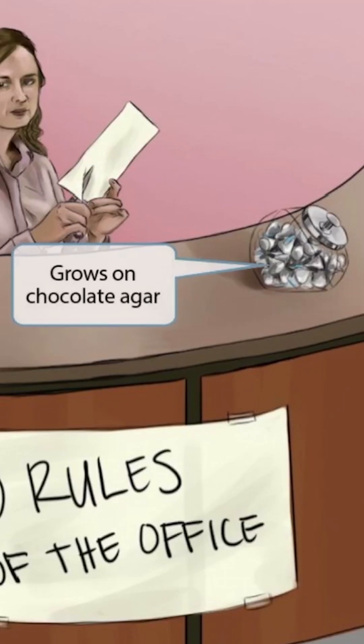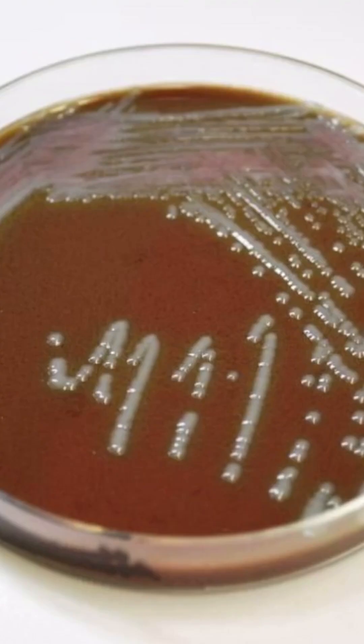Also notice that we've shown a jar of chocolate, which is here to help you remember that H. flu grows on chocolate agar. We covered this in more detail in section 20, which is our Neisseria overview video, but recall that this is an image of chocolate agar. As you can see, it has a distinct brown appearance and looks kind of like chocolate. Chocolate agar is simply heated blood agar, which contains lysed red blood cells.